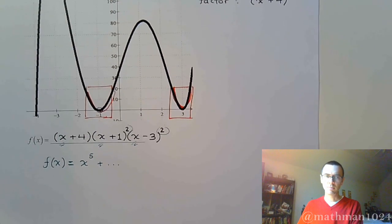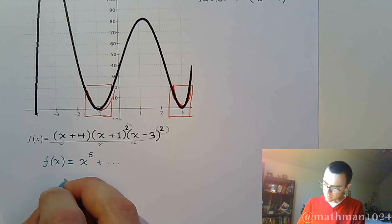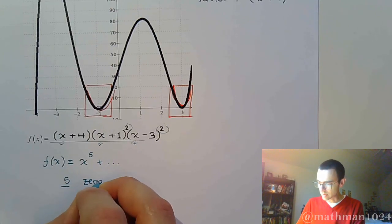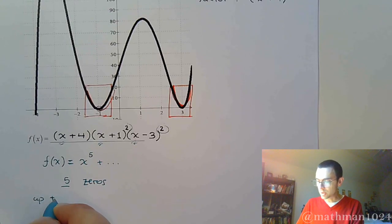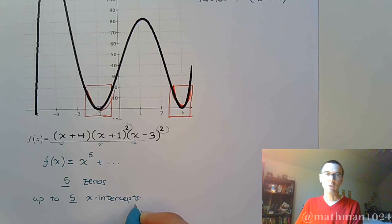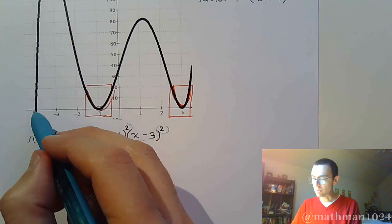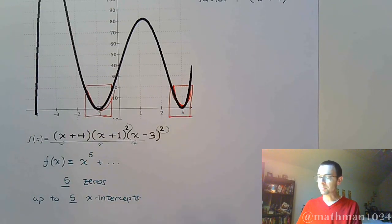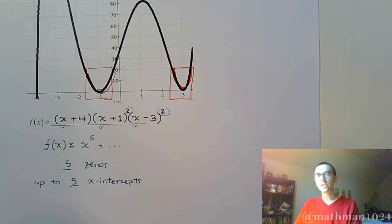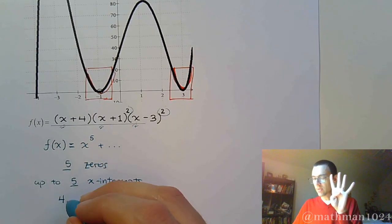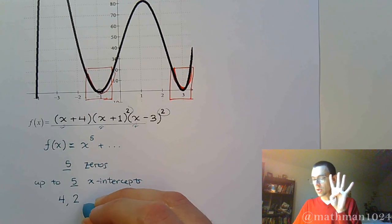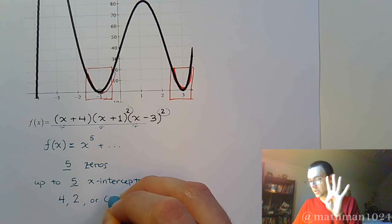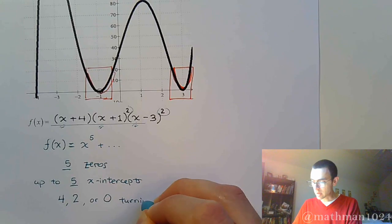Polynomial of degree 5, what does that mean? That means that you have five zeros. That means you have up to five x-intercepts. Well, in our picture you see that we only have one, two, three x-intercepts, right? And in terms of the turning points, since it's degree 5, the number of turning points will either be 4 or less than that by a multiple of 2. So 4, 2, or 0 turning points.